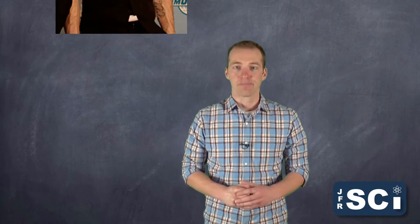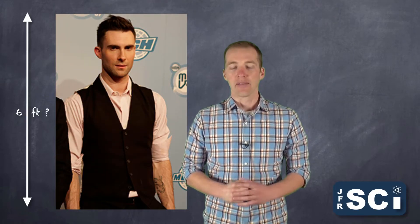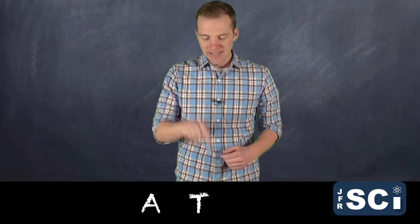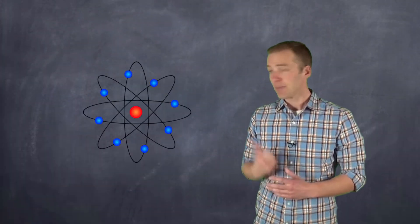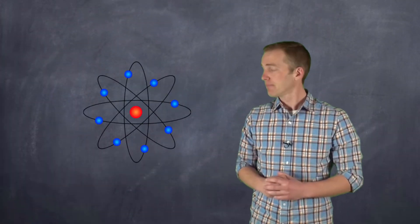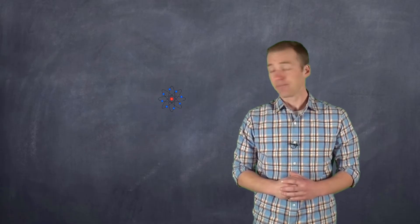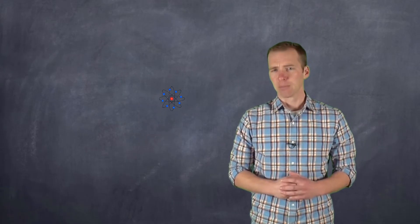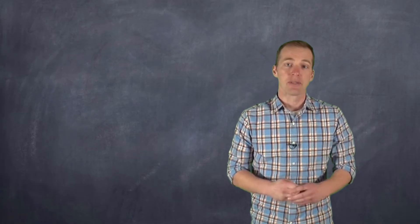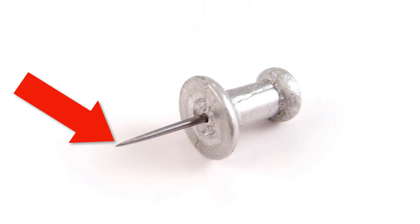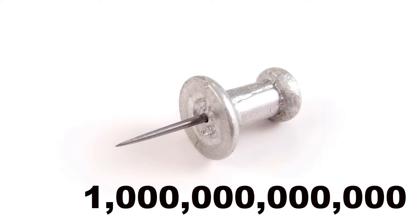Pop quiz! How big is an atom? A-T-O-M. How big is an atom? This big? You're probably a little smaller. Smaller? Smaller. So small that we certainly wouldn't be able to see it on this video. In fact, it's so small that if we were to look at the head of a pin, there would be about one trillion hydrogen atoms.